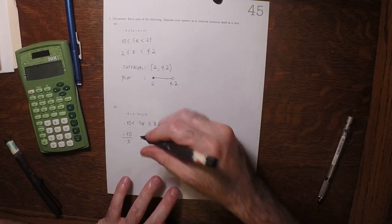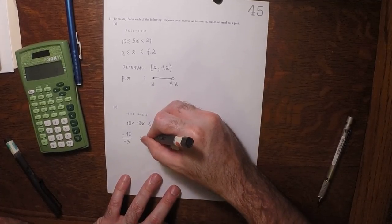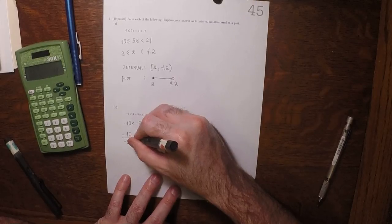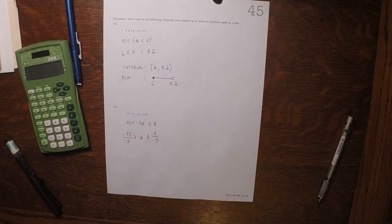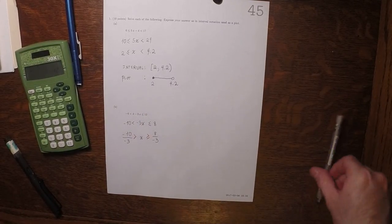Notably, because we divided by a negative, the direction of the inequalities reverses. Those are now pointing in the other direction.